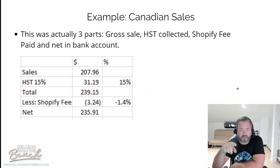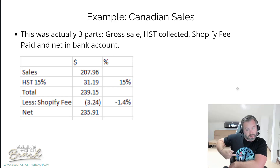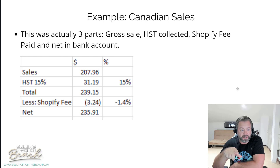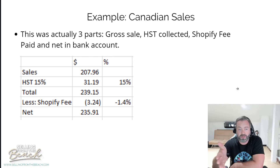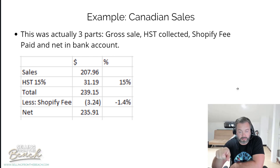So there are actually a few parts in this transaction. The sales on this we're going to say were $207.96. This was charged at HST — harmonized sales tax — at a rate of 15%, so in the Maritimes, that's $31.19 for a total of $239.15. So that's what the customer paid through your website on this transaction: $239.15. Now what happened was Shopify charged a fee of $3.24 on this transaction, and the net of $235.91 came into your account.